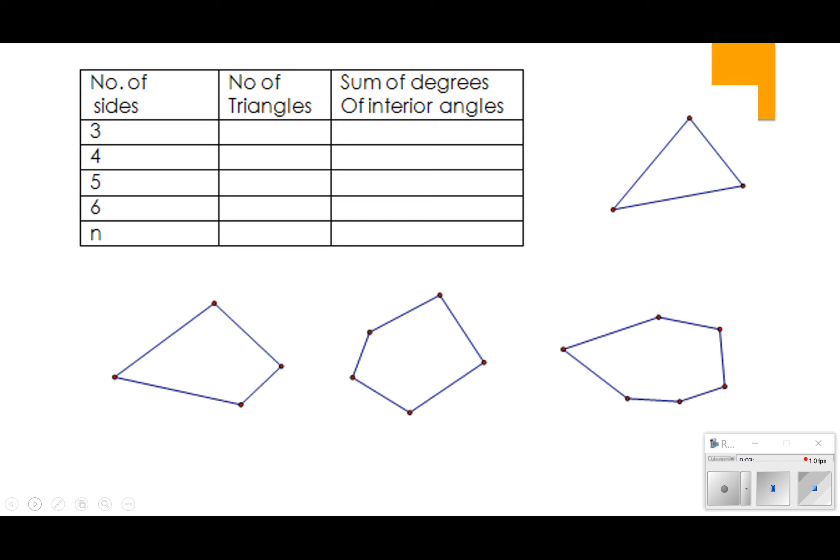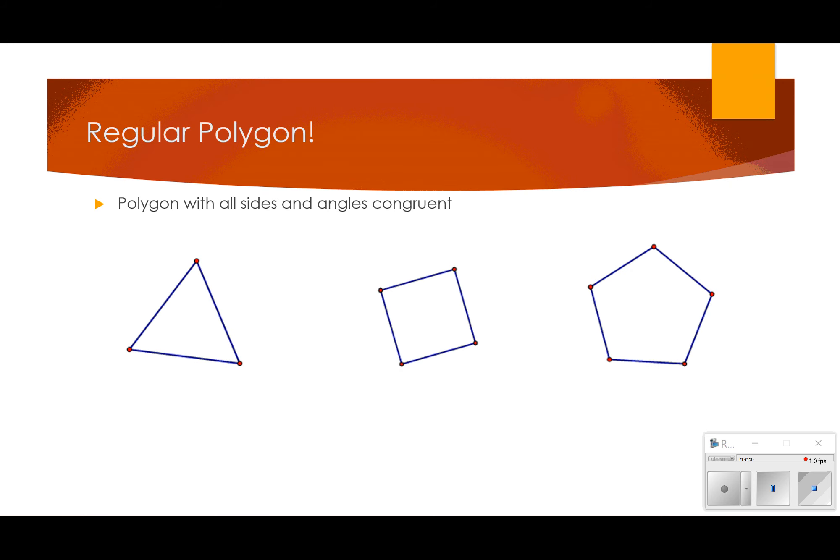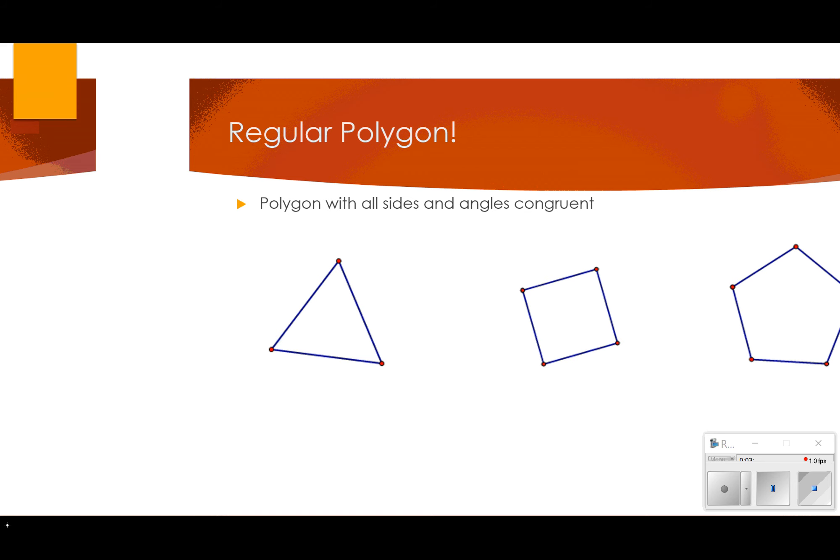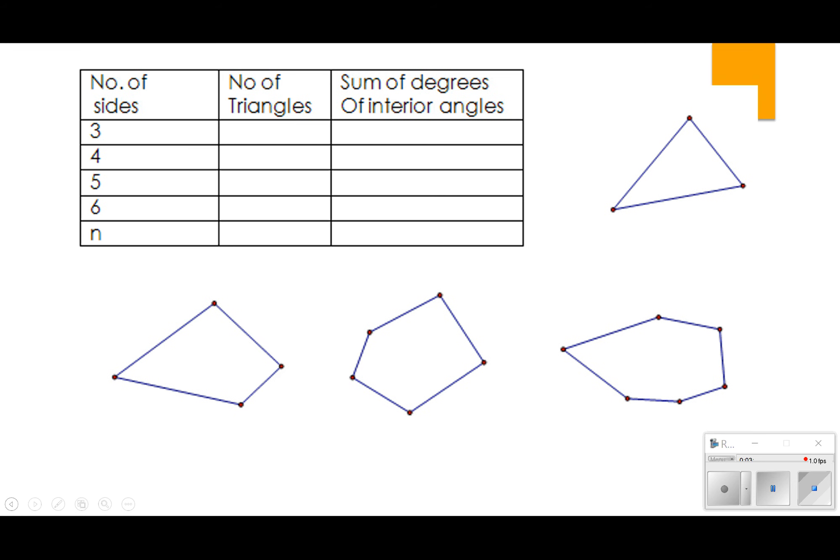So I'm just going to kind of show you a little exploration of a polygon that hopefully will help you remember some of the rules. All right. So one of the ways we look at those is we look at the triangles that are made by breaking up the polygon. So when I look at a triangle, it just makes one triangle in it, basically. And so we know from our chapter on triangles that the sum of the degrees of its angle is 180 degrees.